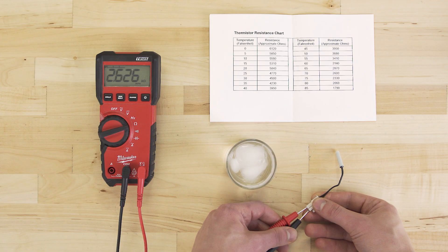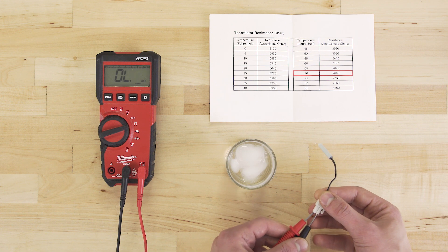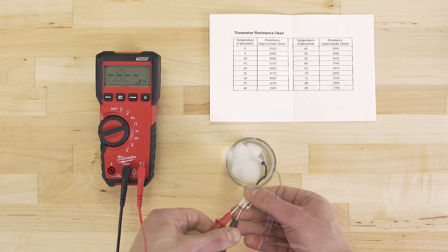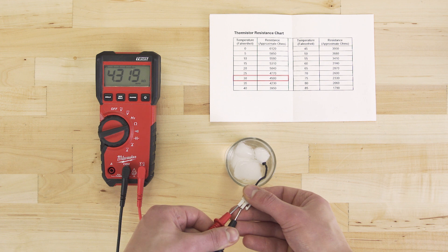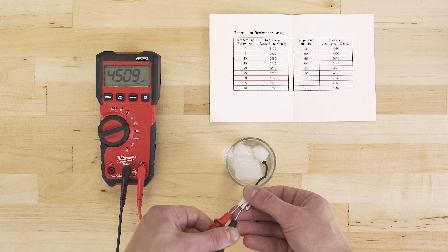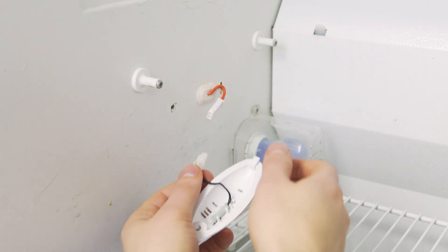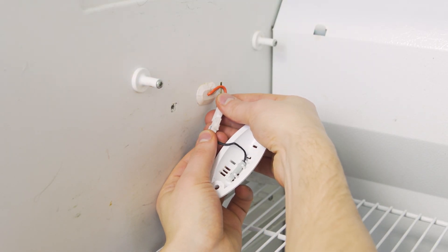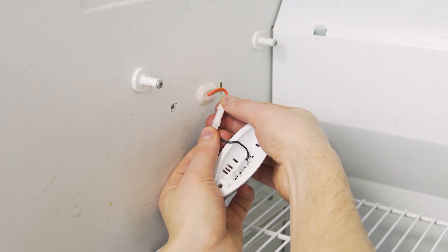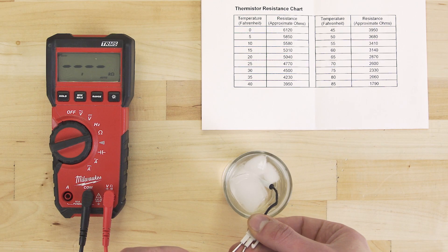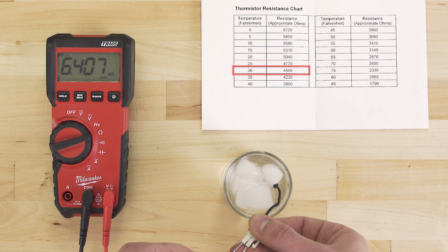To verify that a thermistor is good, we'll have to test the resistance at two different temperatures. At room temperature, we're getting a reading of 2.6 kilo ohms. In a glass of ice water, we'll see a reading of 4.5 kilo ohms. Over time, thermistors can start to wear down, and will need to be replaced. If the resistance is significantly different than its rated value, then it can cause the appliance to be too cold or too hot.